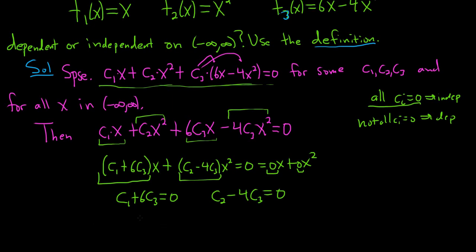And what you can do is just maybe solve this one for c1. So this is negative 6c3. And then solving this one for c2, you get 4c3. And it looks like they're not all 0.